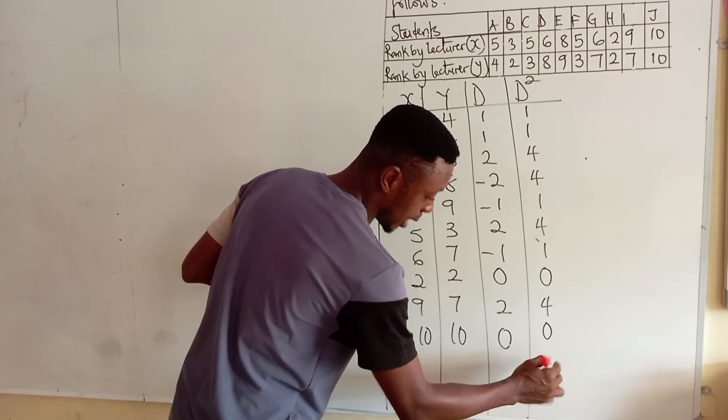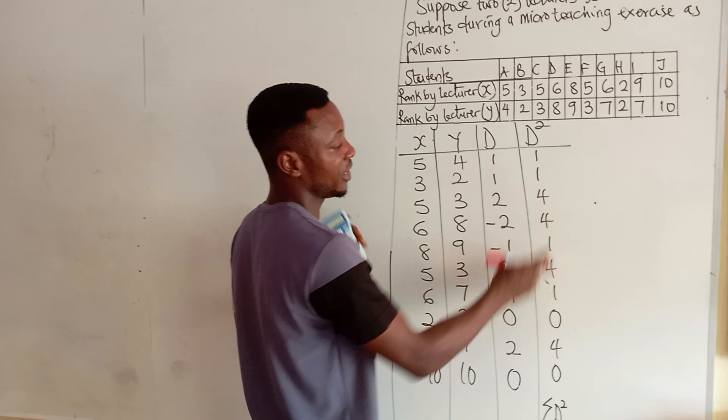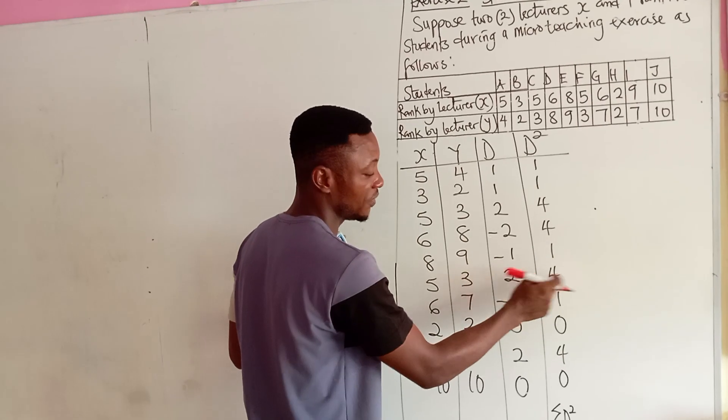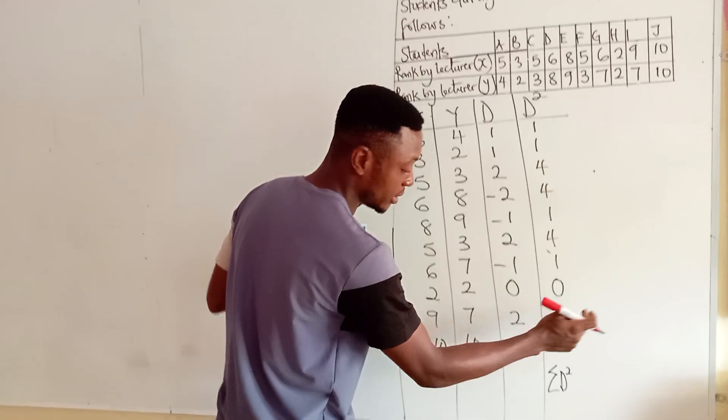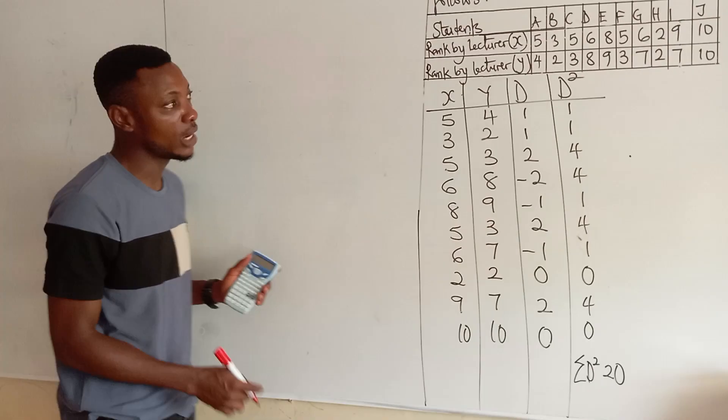So, this will have a sigma or summation D². That is add everything here. This is 1, 2, 6, 10, 11, 15, 16, 20. So, this will give me 20 as my summation D².